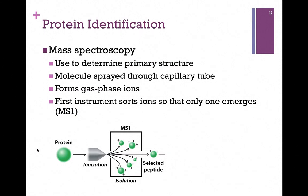The molecule is first sprayed through a capillary tube, and that enables it to form gas phase ions. In the illustration at the bottom of our slide here, here's our protein as this green sphere. We're going to spray it through a capillary tube, and that gives us these gas phase ions.